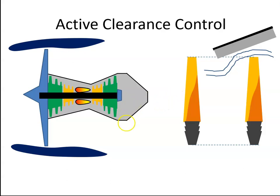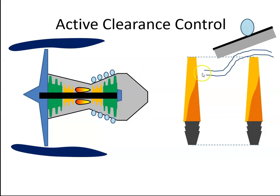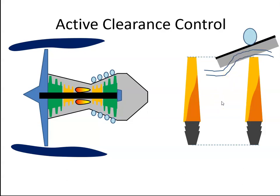So what some modern gas turbine engines do is they use active clearance control. They take compressor air and bleed it out to pipes that encompass the turbine section — like here — and this cool air will help cool the casing. When the casing cools, it will shrink, and once it shrinks, the air will no longer be able to bypass it.